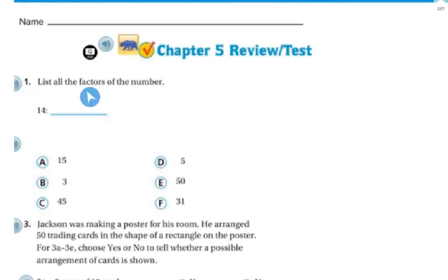Number 1 asks us to list all the factors of this number, and the number is 14. So I'm thinking about my multiplication chart, and I know that 1 times 14 is 14, and I know that 2 times 7 is 14. So my factors are 1, 2, 7, and 14.